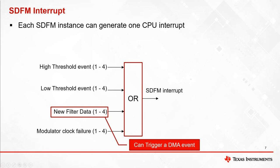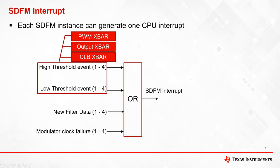A new filter data event can trigger a DMA transaction. High or low threshold comparator events can be used to shut down the PWM using the PWM crossbar, can be used to design custom logic in CLB using the CLB crossbar, and can be brought out on a GPIO using the output crossbar.